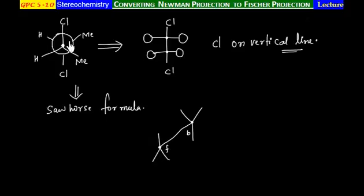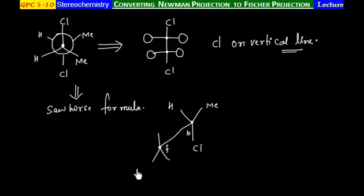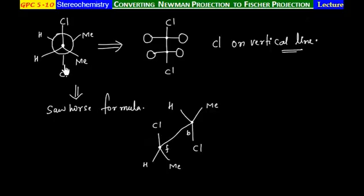On the back carbon, left side we have hydrogen, right side we have methyl group, and Cl we have on the downside. On the front carbon, left side hydrogen, right side we have methyl, and chlorine we have on the vertical line.